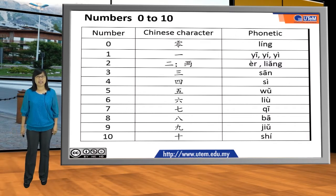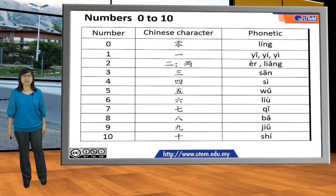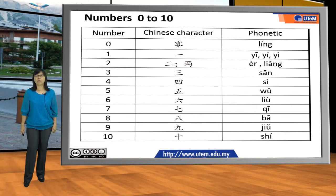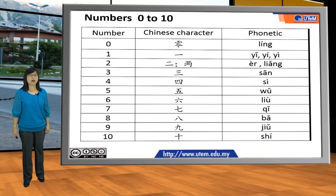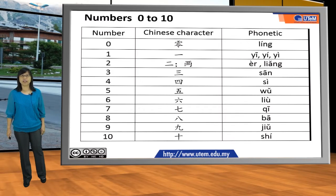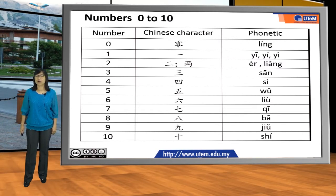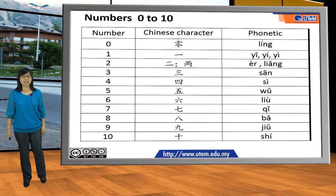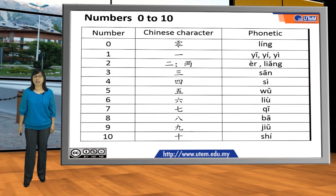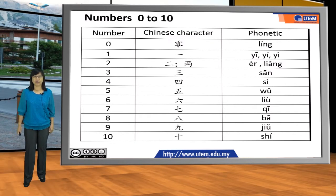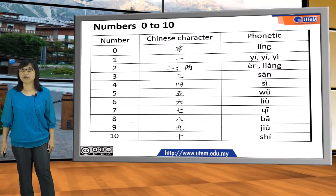Zero is 零. Number one is 一. The number two has two forms in Mandarin, which are 二 or 两. Three is 三, four is 四, five is 五, six is 六, seven is 七, eight is 八, nine is 九, and ten is 十. Let's repeat all the numbers again.